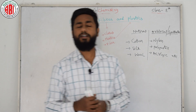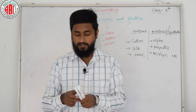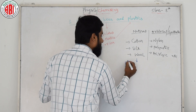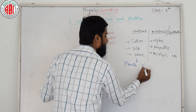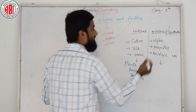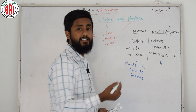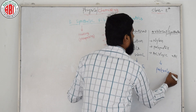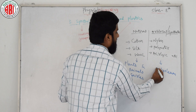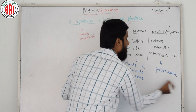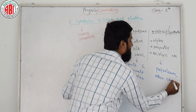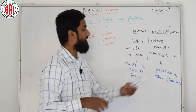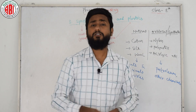Students and viewers, we have a simple logic. If we are calling something natural fiber, we are obtaining it directly from plant and animal sources. Whereas if we call it artificial fiber, we get this type of fiber from petroleum products — the raw materials from petroleum — or from other chemicals. So we get artificial or synthetic fiber from petroleum or other chemicals.